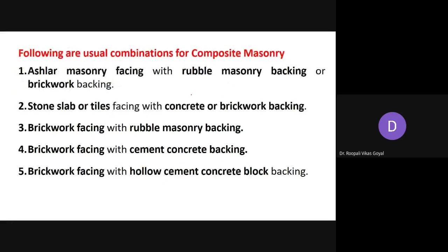The following are the usual combinations generally adopted for composite masonry: first, ashlar masonry facing with rubble masonry backing or brickwork backing; second, stone slab or tiles facing with concrete or brickwork backing; third, brickwork facing with rubble masonry as backing; fourth, brickwork facing with cement concrete as backing; and fifth, brickwork facing with hollow cement concrete blocks at the back side.